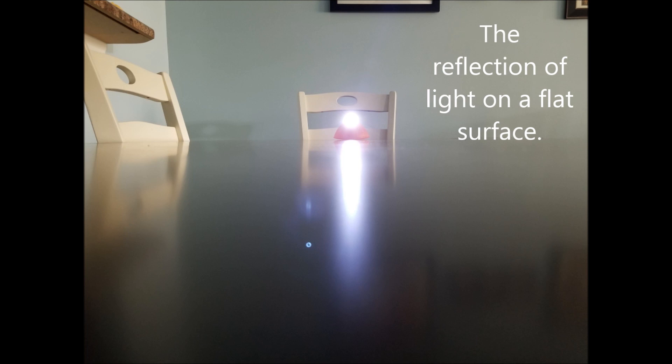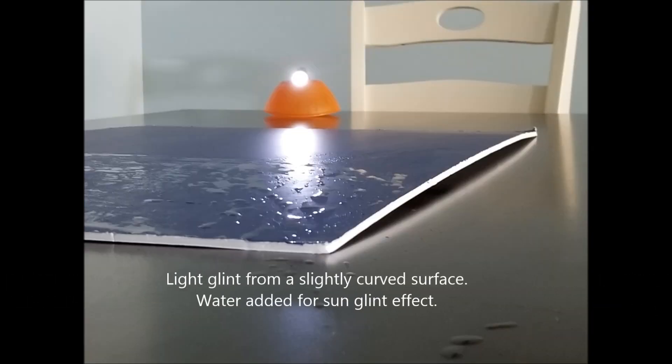Here is a reflection of light on a flat surface. Light glint from a slightly curved surface. Water added for a sun glint effect.